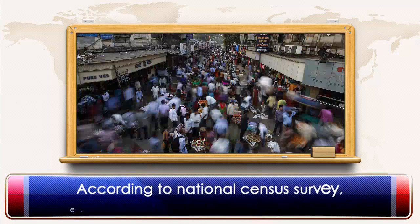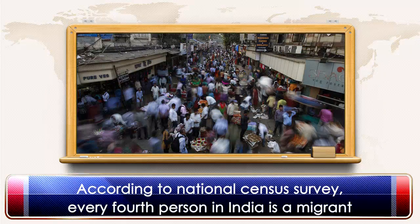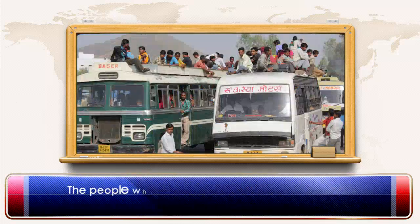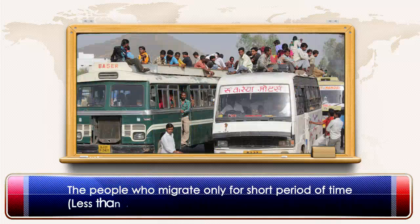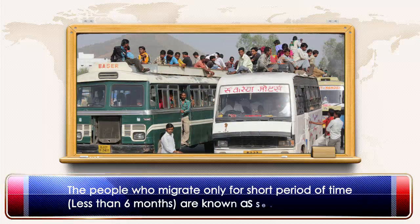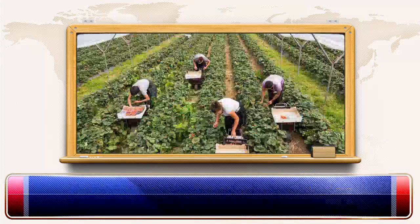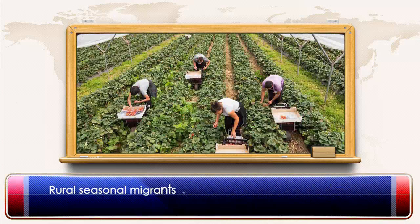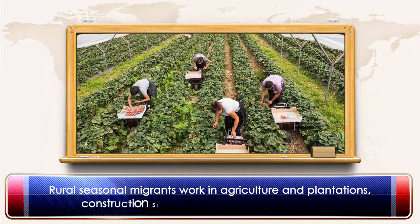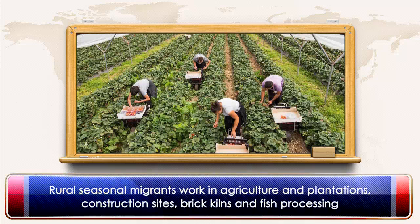According to the national census survey, every fourth person in India is a migrant. The people who migrate only for short periods of time are known as seasonal migrants. Rural seasonal migrants work in agriculture and plantations, construction sites, brick kilns and fish processing.